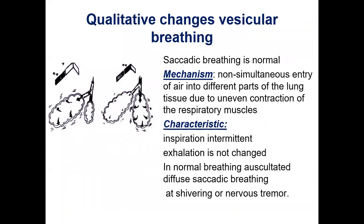Qualitative changes of vesicular breathing include saccadic breathing, characterized by interruption of inspiration while the expiratory phase is normal. The mechanism is non-simultaneous entry of air into different parts of lung tissue and alveoli, which may develop due to uneven contraction of respiratory muscles during shivering — for example, nervous tremor or shivering from cold. Shivering at the first stage of fever may also cause uneven contraction and produce saccadic breathing.